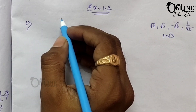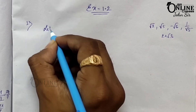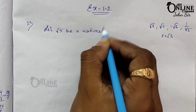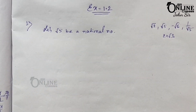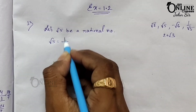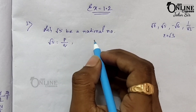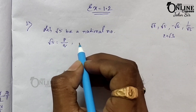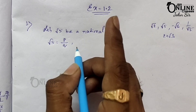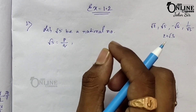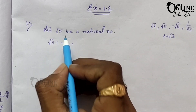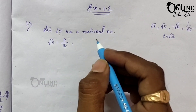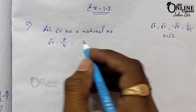Let √5 be a rational number. So √5 = p/q, where p and q are integers and q ≠ 0, and p and q have no common factor except 1. Since √5 is a rational number, it must be expressible in p/q form, so p and q are integers, q ≠ 0, and p and q have no common factors.